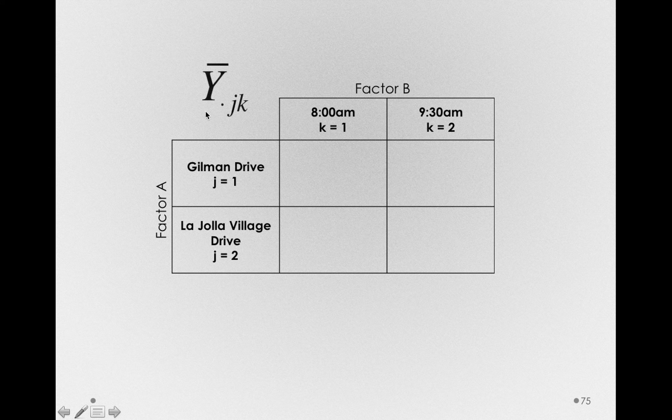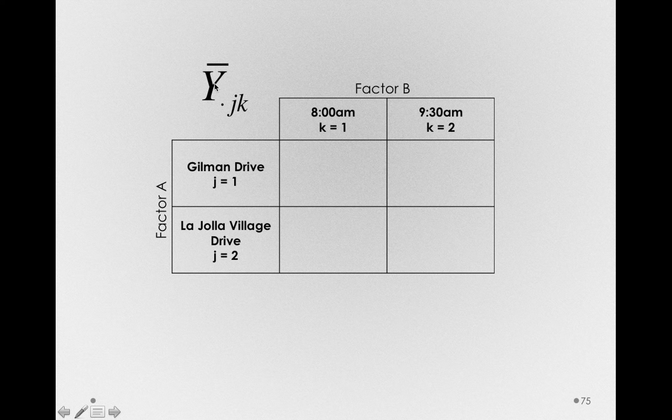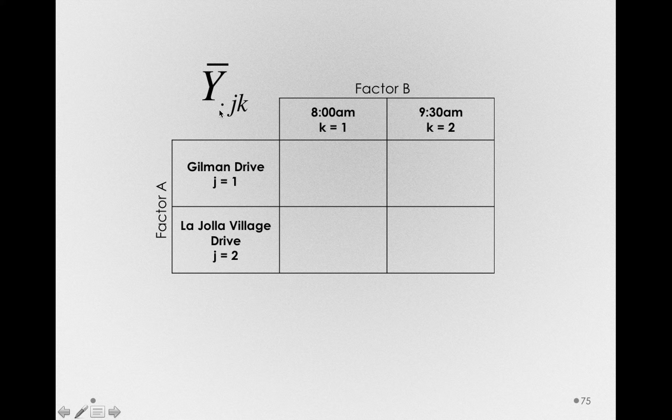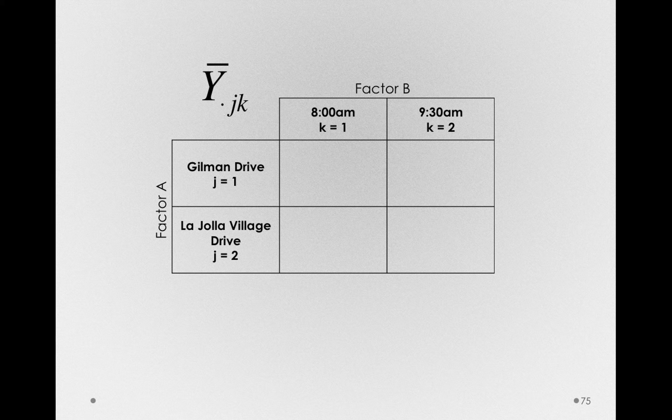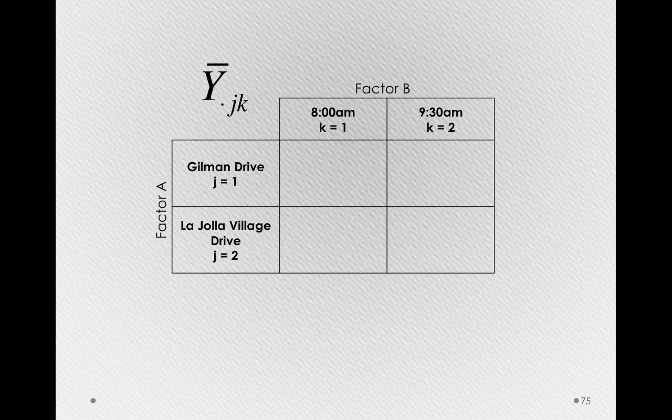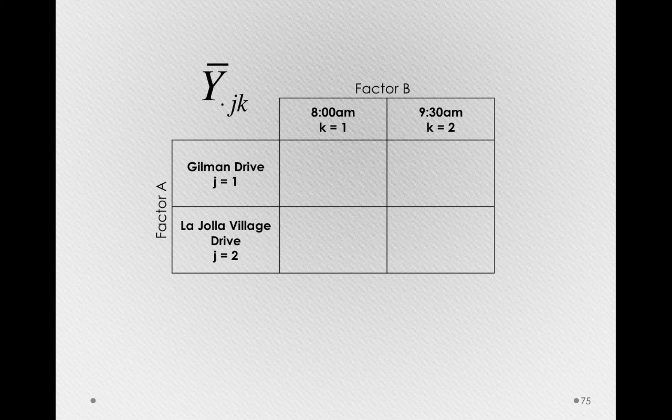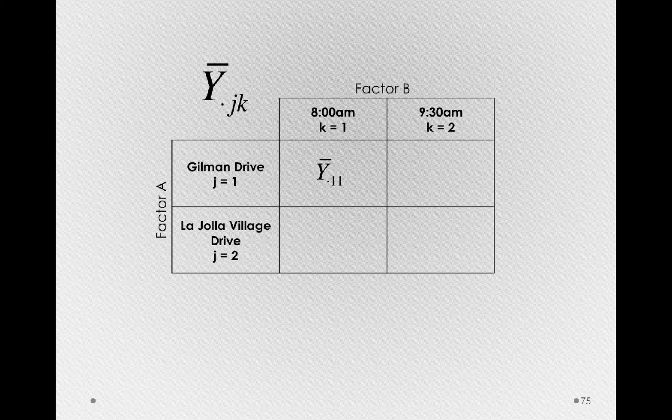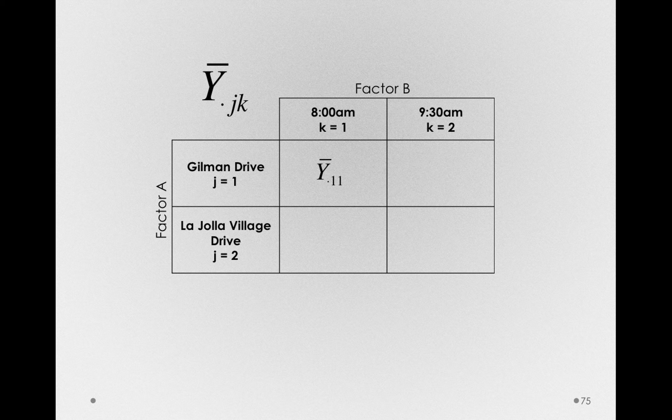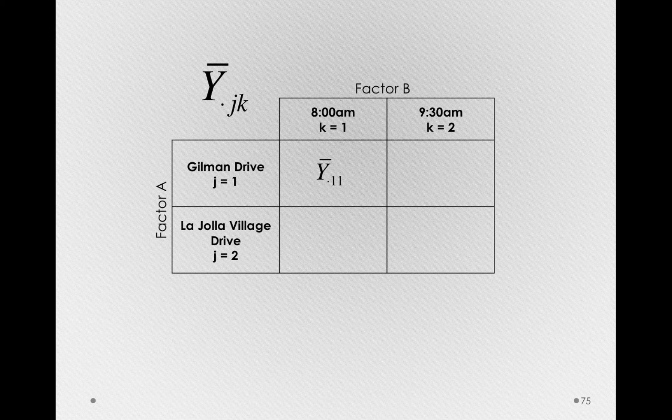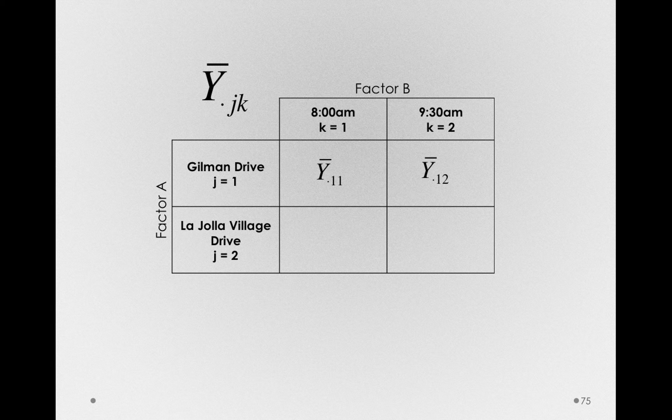Now, let's remember what the value is for the mean of a group. That is simply y bar dot jk. And remember, the dot is simply to keep track notationally. We're acknowledging that we're averaging over all the individuals in each group in order to get a group mean. So, the mean for Gilman Drive at 8 a.m. would simply be written as y bar dot one one. Gilman Drive at 9:30 a.m. simply increments the kth term, so y bar dot one two.